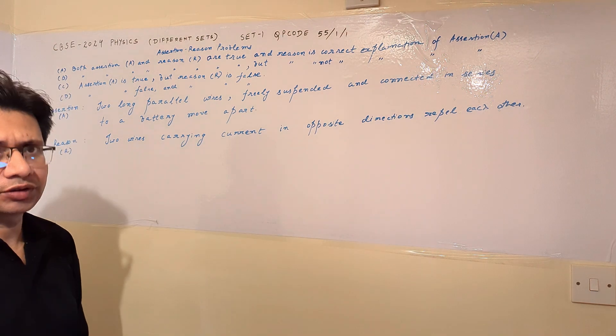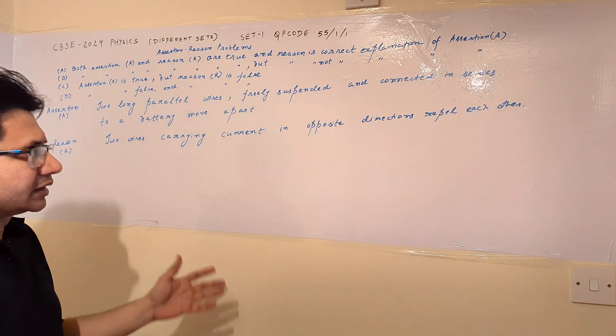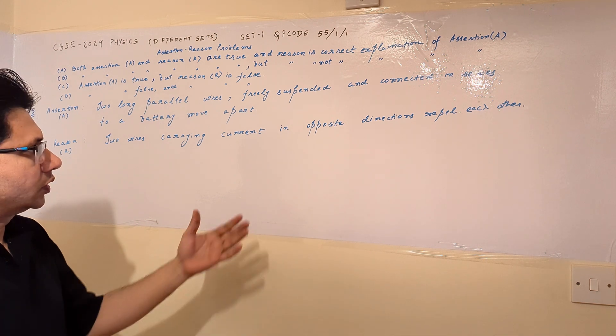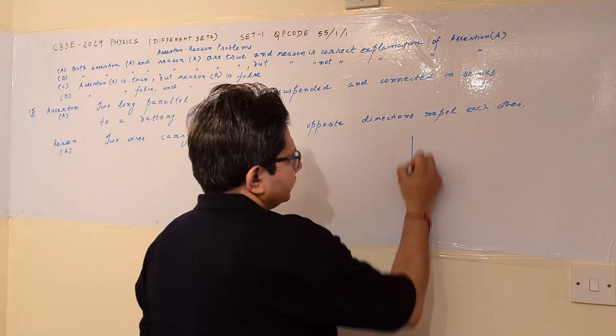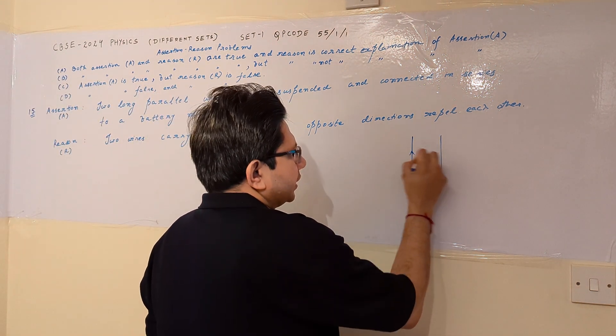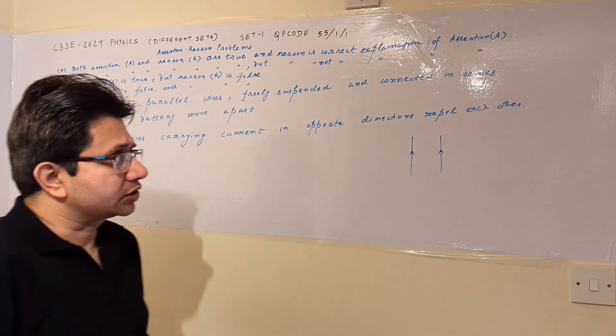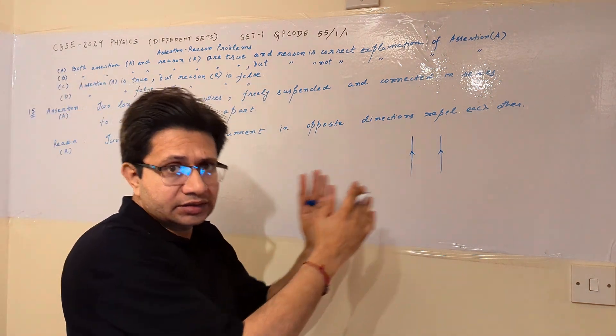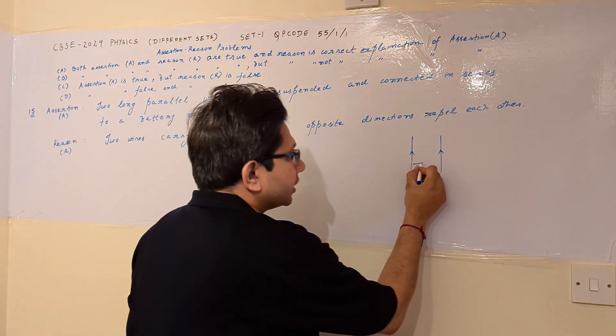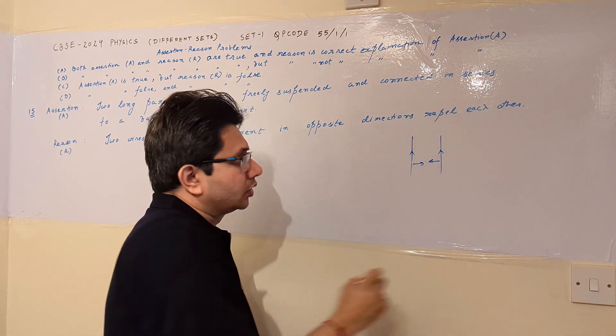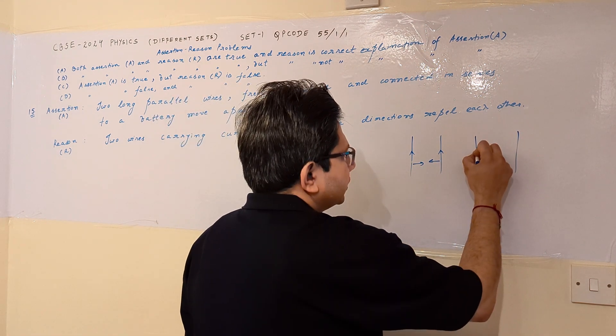So the basic concept here is that if there are two wires in parallel carrying current in the same direction, then they attract each other. But if the current is in opposite direction in these parallel wires, then they repel each other.